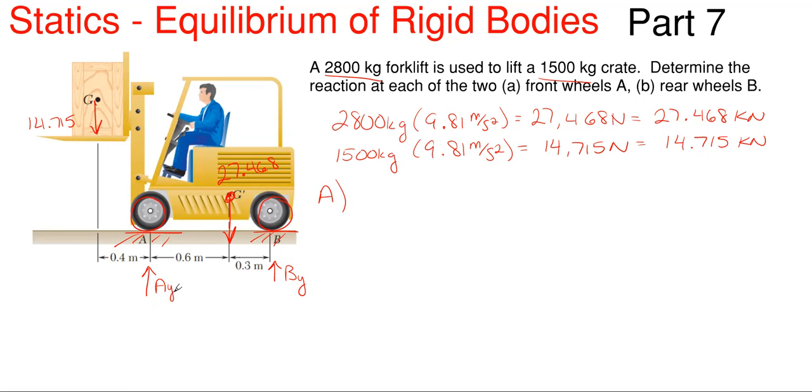In order to do that, we're going to sum moments at the B axis, and that all has to be in equilibrium, so it all has to equal zero. By B axis, I mean the axle of the actual wheels. We're going to have our crate weight, which would be the 14.715 kilonewtons times its total distance to point B, which is 0.4 plus 0.6 plus 0.3, giving 1.3 meters. It will be rotating counterclockwise, and I'm taking counterclockwise as positive. Then we're going to have minus Ay since it will be rotating clockwise about point B.